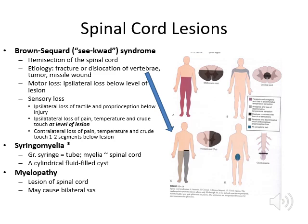Syringomyelia is another kind of central cord injury where a fluid-filled cyst develops, and it can have the same signs and symptoms as central cord syndrome. Myelopathy — myelo meaning spinal cord, plus pathology — refers to pathology of the spinal cord, with symptoms varying bilaterally depending on how much is damaged. Cervical myelopathy, for example, can result from a central bulging disc in the cervical region pressing into the spinal cord.